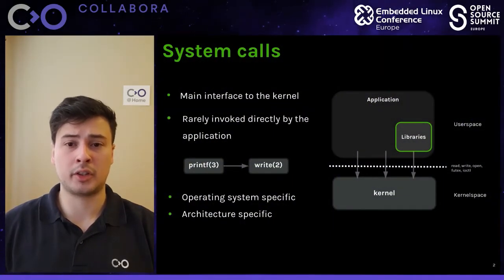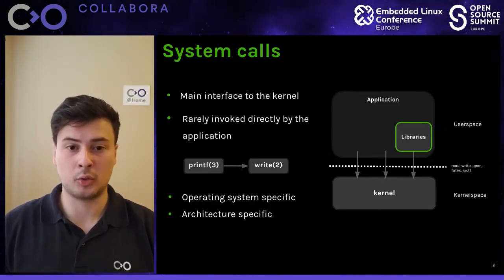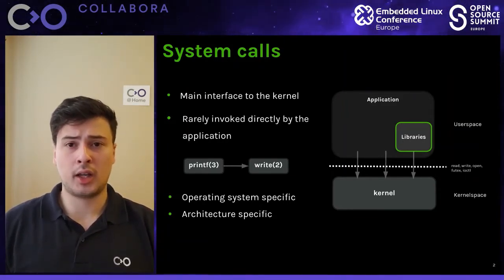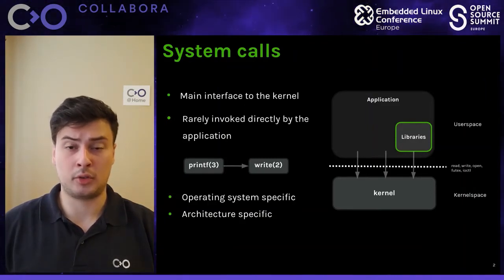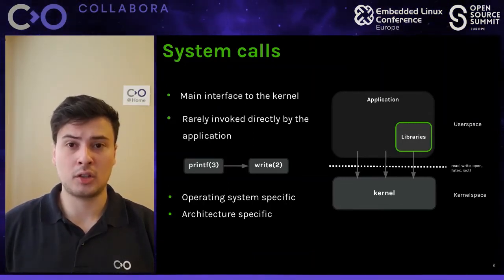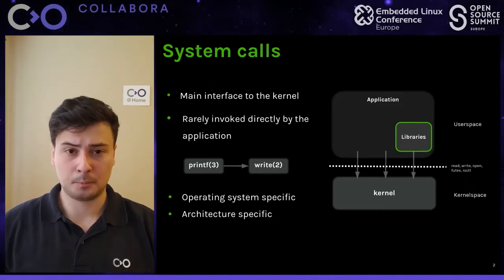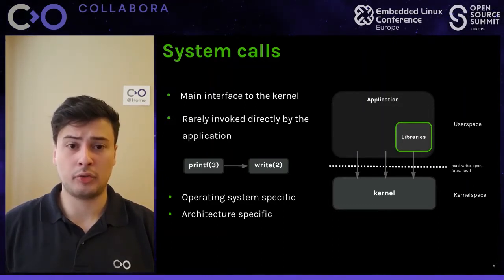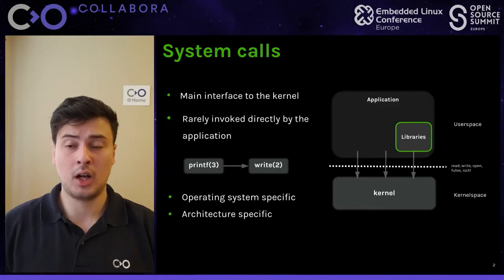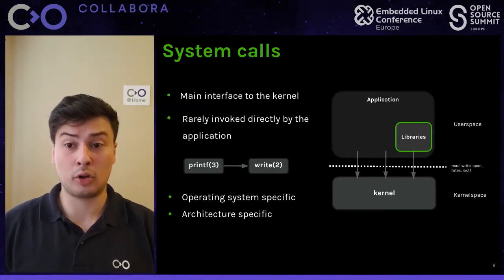A system call is a mechanism for the kernel to provide a specific service to the application. It's the main interface that an application has to reach the kernel and ask for something, ask for a specific feature. The kernel and a process execute in different modes. The kernel has access to the entire machine, to the devices and peripherals, while the application operates in a much more restricted space where it thinks it's operating alone on the machine. It has a view of only its own memory and cannot see all the processes. The system call interface is that barrier where the application can reach the kernel and ask for something — for instance, read a file or write to standard output.